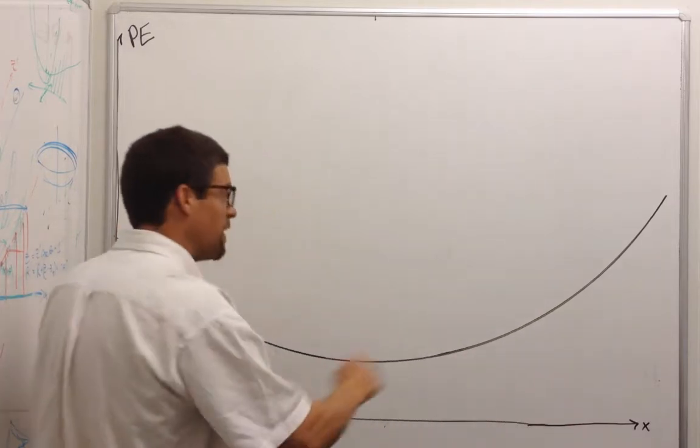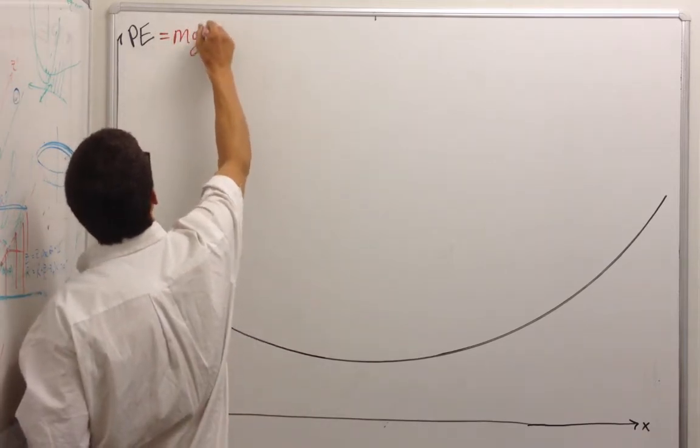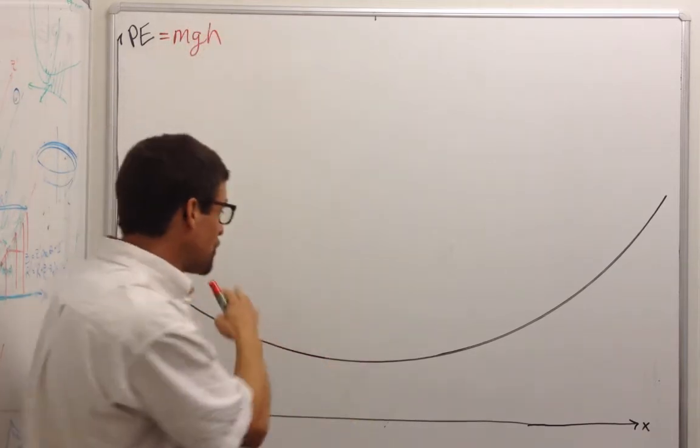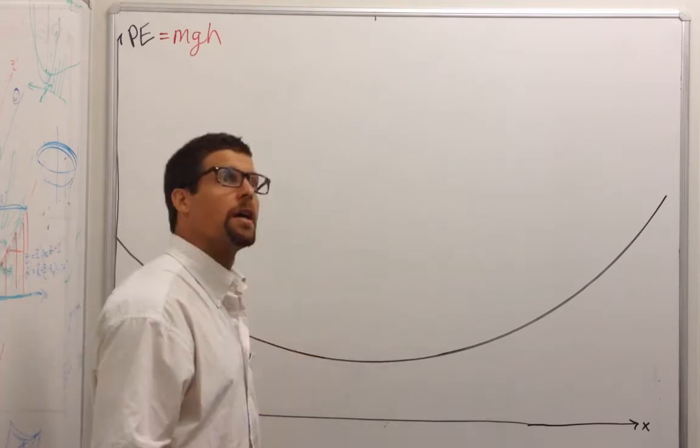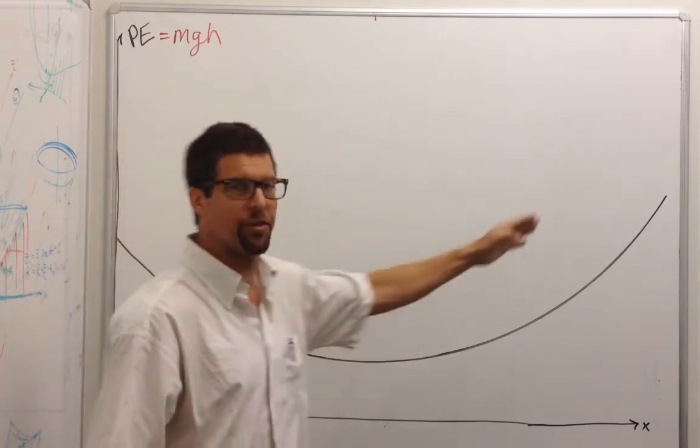This could be a function of height, for instance, because potential energy can equal mgh. If this was just a graph of elevation in a gravity field, this height graph would be the same as a potential energy graph.